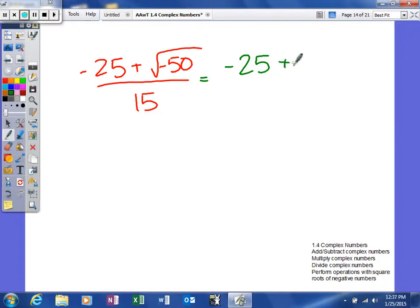So I'm going to simplify my nice little radical here. What I should get is negative 1 times 25 times 2. So that'll turn out to be 5i square root of 2.